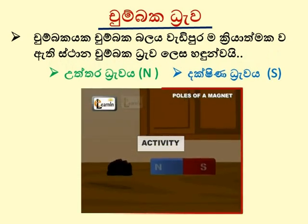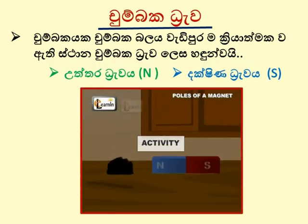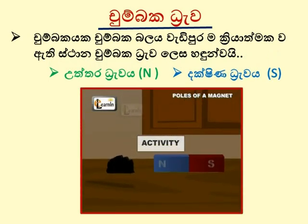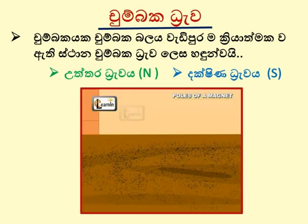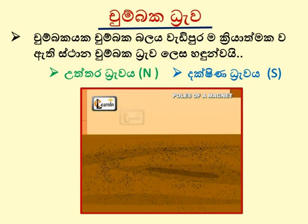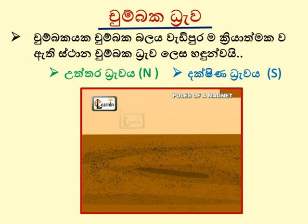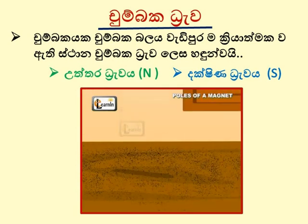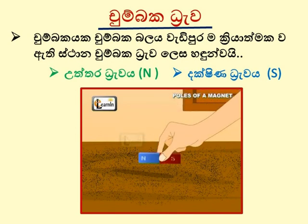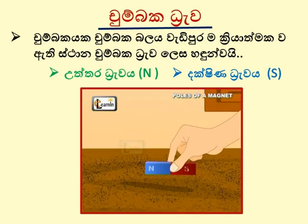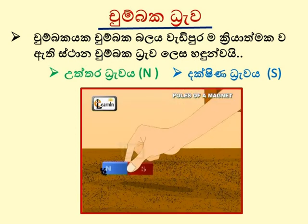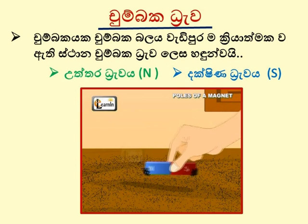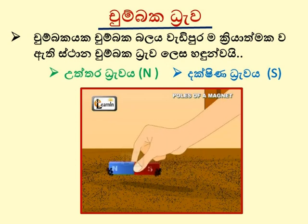While magnets get attractive, randomly place some iron filings on a table. Now take a magnet and place it on the table for some time. Then, remove the magnet and observe where the filings are attached.